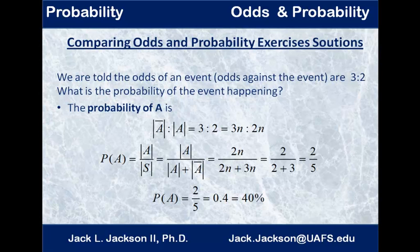So, the probability of A is the size of A over the size of S. Notice the size of S is the sum of the two sizes here of A and A complement, which are 2n and 3n, respectively.